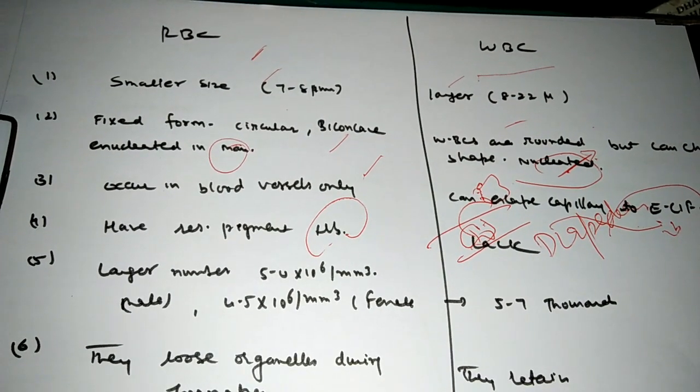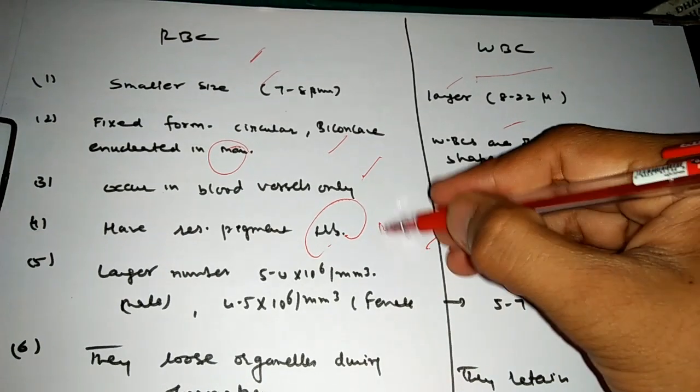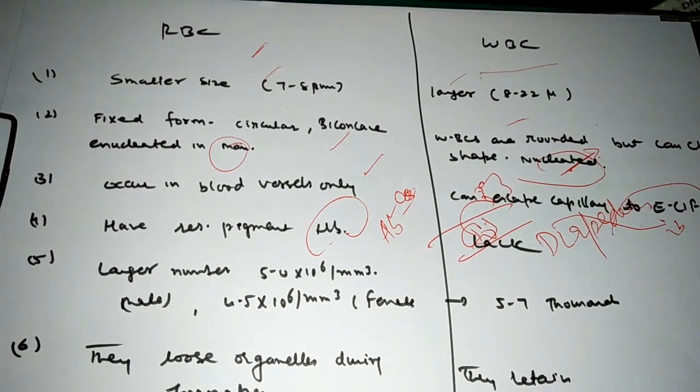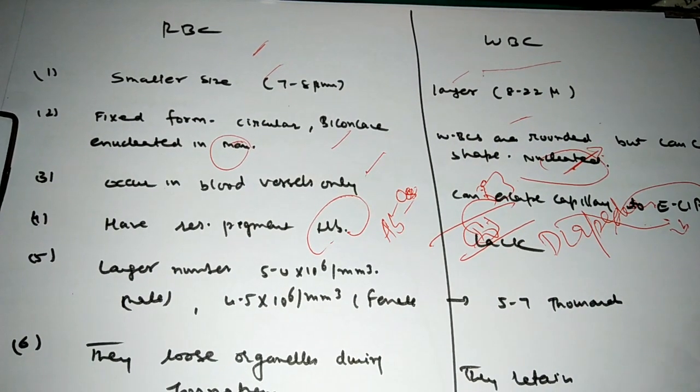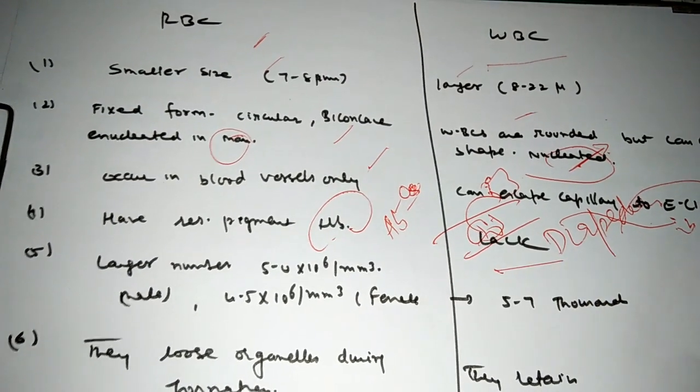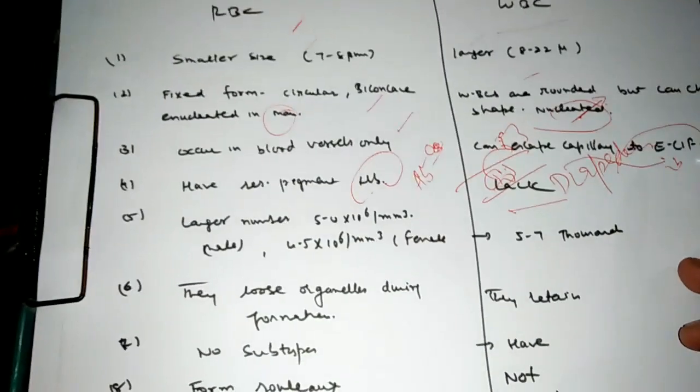Next is having respiratory pigment hemoglobin: oxygen carrying, transporting, showing Bohr effect. Hemoglobin can transport eight oxygen molecules. It is a main factor for the oxygen and carbon dioxide transport. The WBC don't have this function and they lack respiratory pigment.